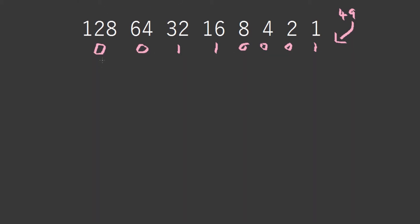Inverting 9 — I have this all planned on a sheet of paper — gives us 1, 0, 1, 1, 0. Now we've inverted it. The final step is, of course, adding 1 to the end of the inverted number. We add 1 to the second number to complete the two's complement.